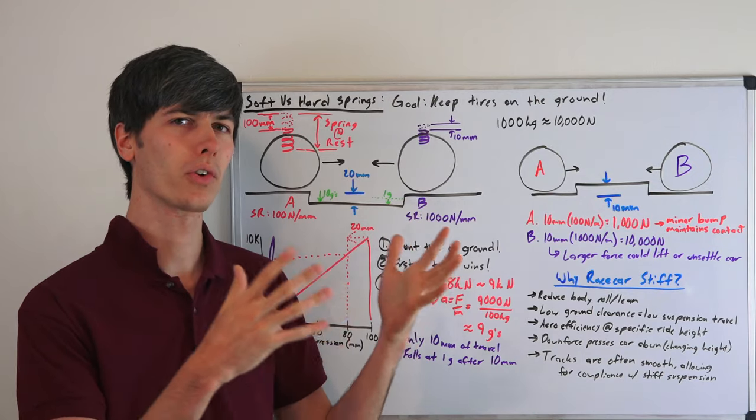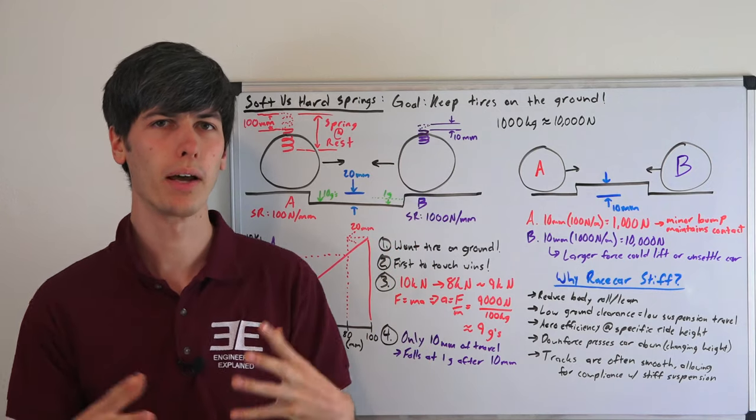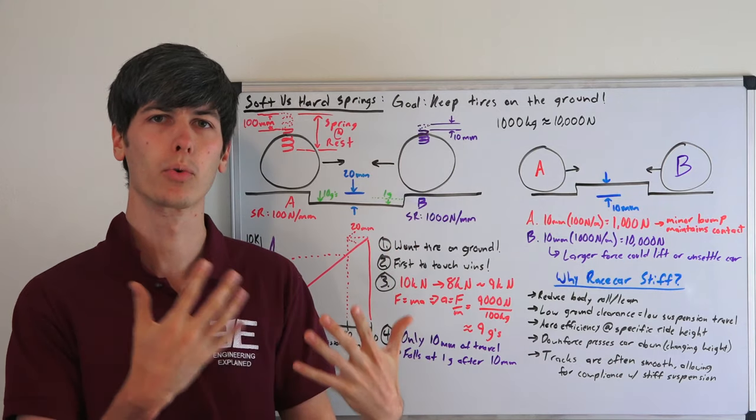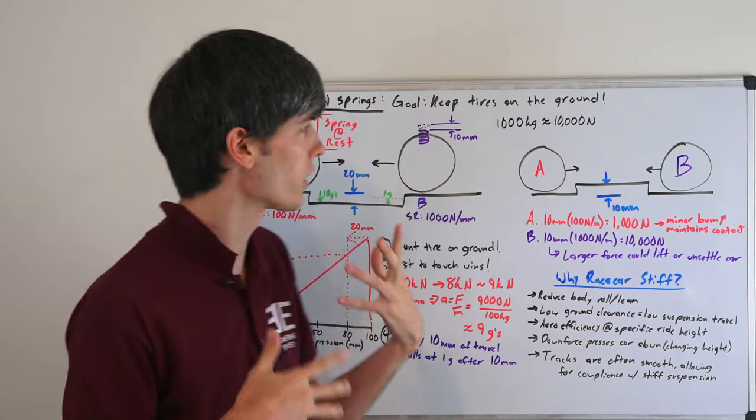So you may think that because sports cars and race cars use really stiff springs, that that's what's best. But in reality, if you want the most maximum grip, you want a softer spring. So why is there this differentiation? Let's talk about that.